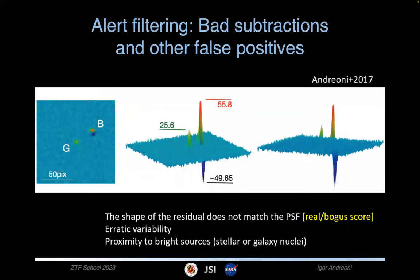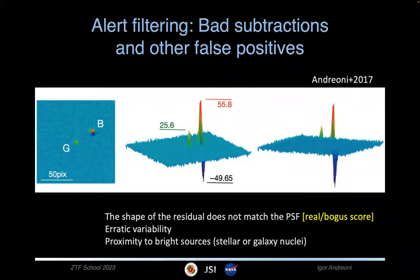First of all, what you want to get rid of is instrumental effects — all these artifacts, bogus and spurious detections that come quite often when you do image subtraction. It's really hard to match a new image to an old image. It's somewhat easier if you're using Hubble, because you don't have atmosphere and all its distortions. But you can still have distortions in the PSF — the point spread function — depending on the region of the detector, and you need the images correctly aligned, which is not always easy to do automatically.